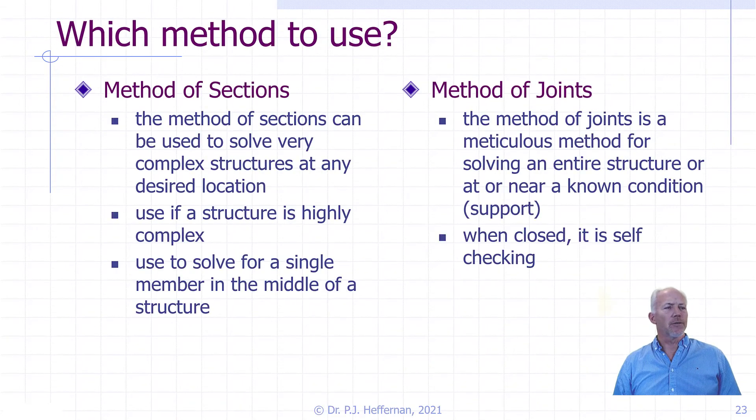So which method do you use? Method of sections can be used to solve very complex structures at any desired location, used if the structure is highly complicated, or to solve for a single member in the middle of the structure. The method of joints, however, is more efficient if you have to solve the entire truss or the members of interest are close to the supports themselves.